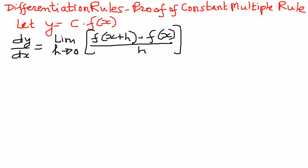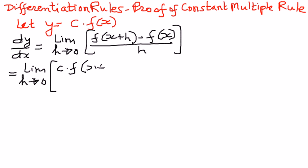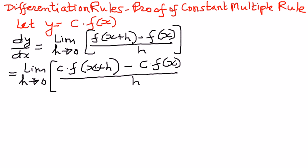Applying the given function into the formula, we can write it as follows. Limit as h approaches 0 of c times f of x plus h — where c is a constant — minus c times f of x, the whole thing divided by h.